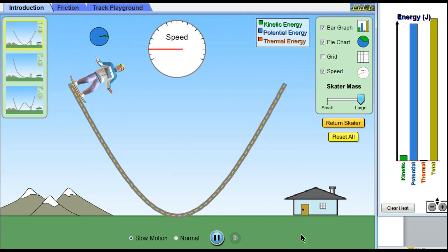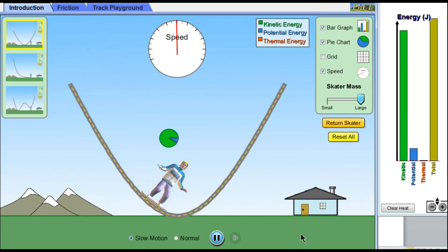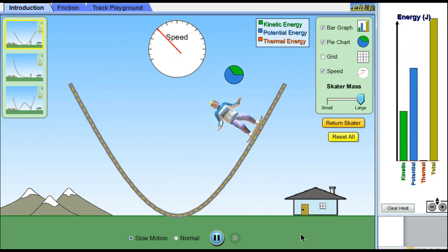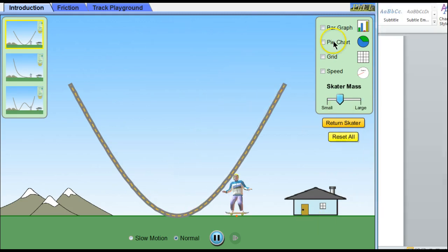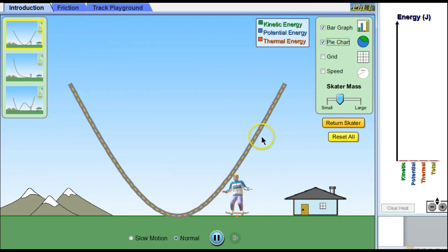So in a number of conservation law type problems, you can cancel out the mass of the object. It will not play a major role in your work. We'll reset all. We'll bring the bar graph and the pie chart back up.